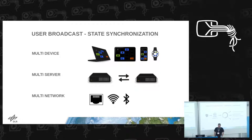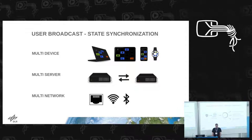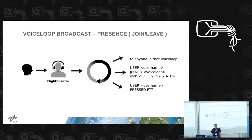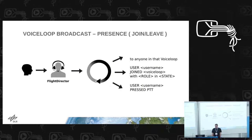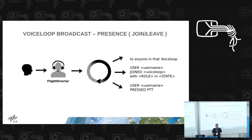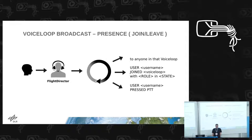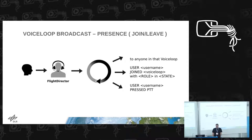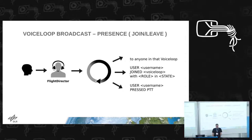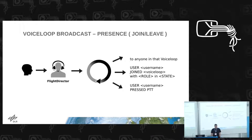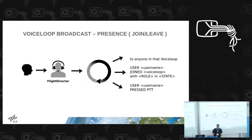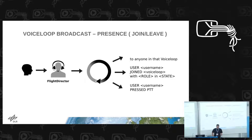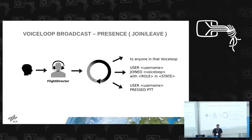In addition to the user broadcast for device synchronization, we use a voice loop broadcast which carries presence information. Whenever a new member joins a voice loop - selecting monitor or talk - this information is distributed to all other users, so the user interface can show who has joined or left the voice loop, or who is currently pressing push-to-talk and actively talking.